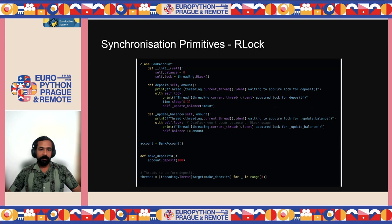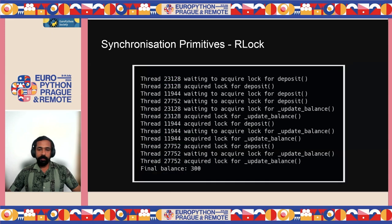We can fix the deadlock using RLock. The only change is initializing self.lock with threading.RLock() instead of threading.Lock(). With RLock, the thread with ID 23128 acquires the lock for the deposit function, and can then re-acquire it for update_balance since it already holds the lock. RLock is useful for scenarios where critical sections are called recursively, like our two nested functions that both need to be locked.